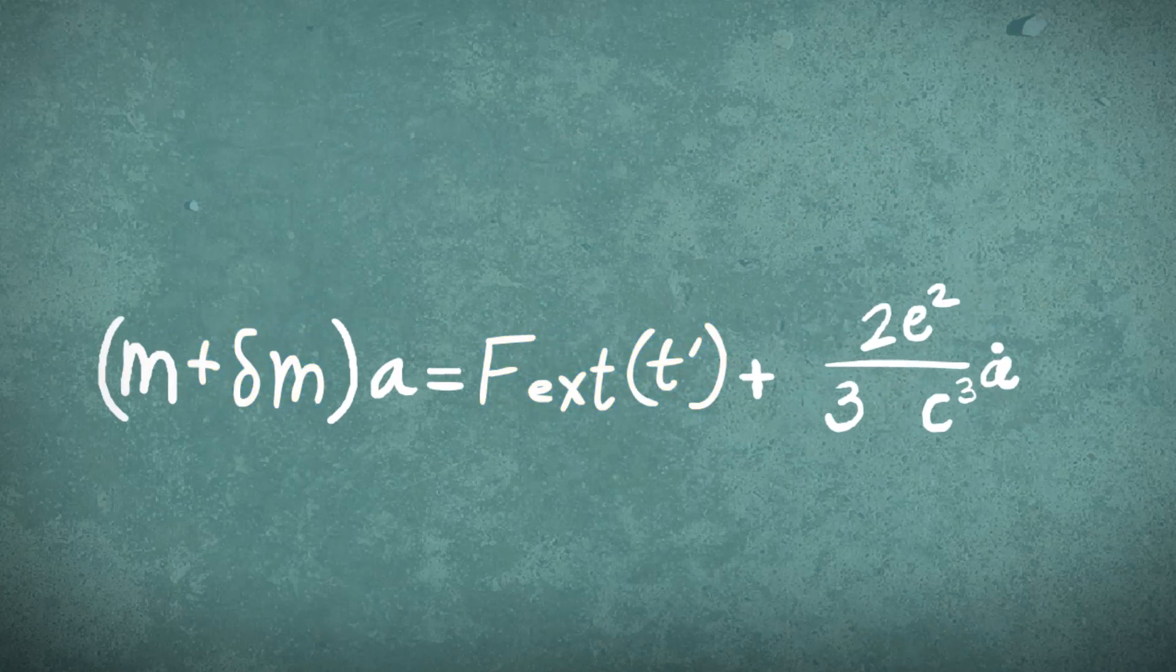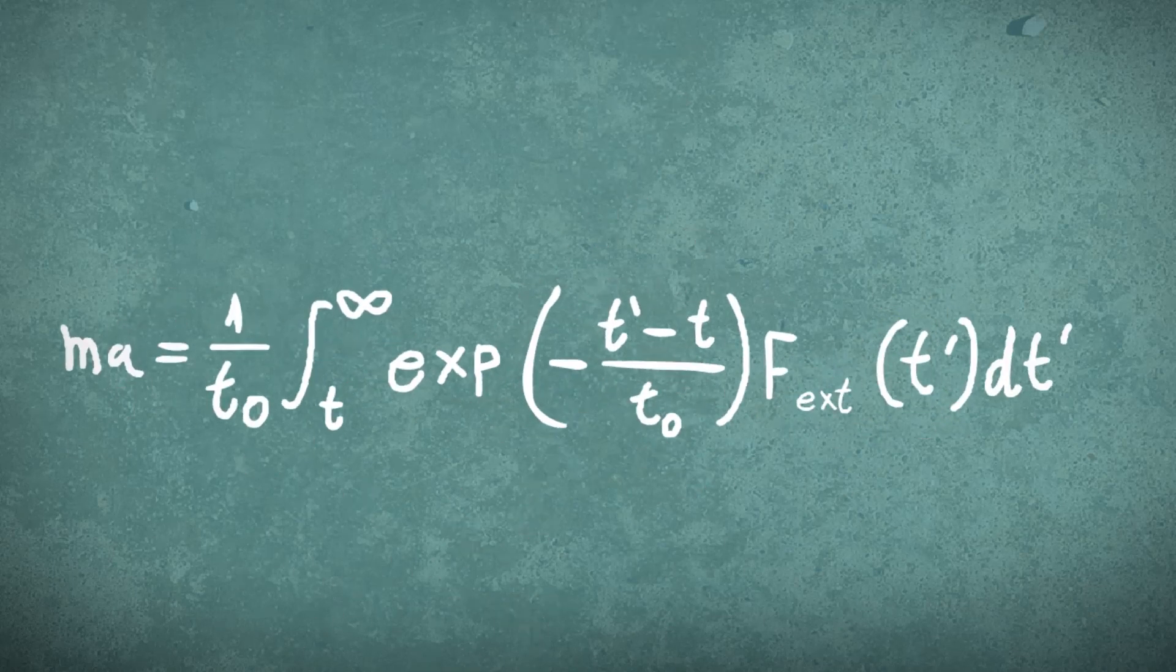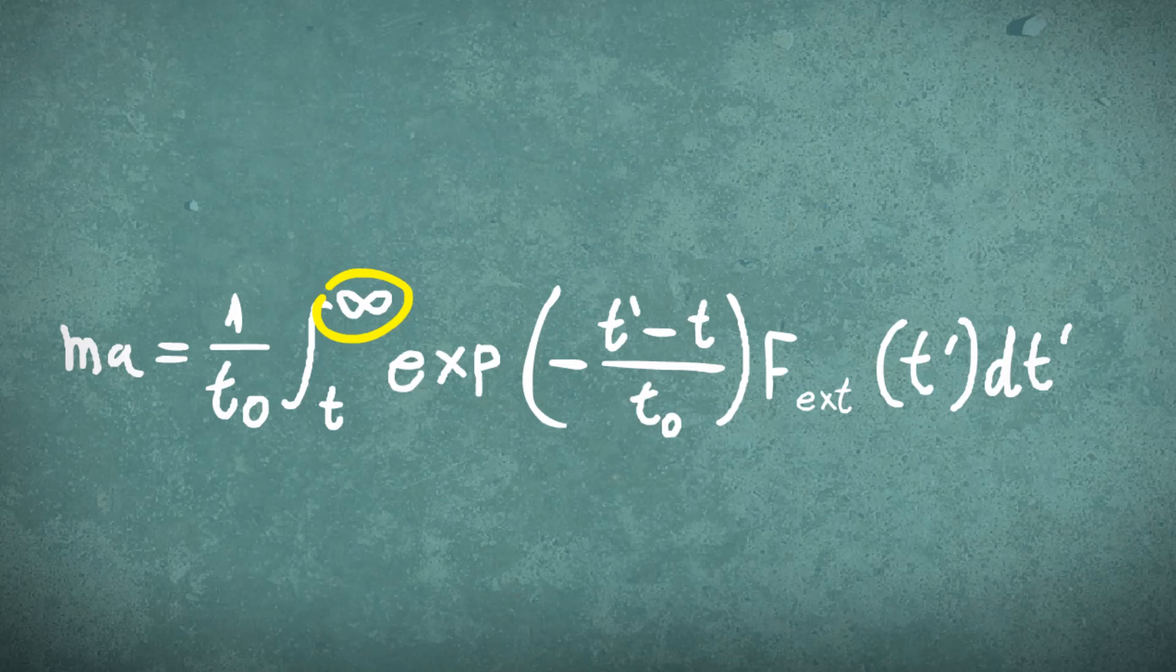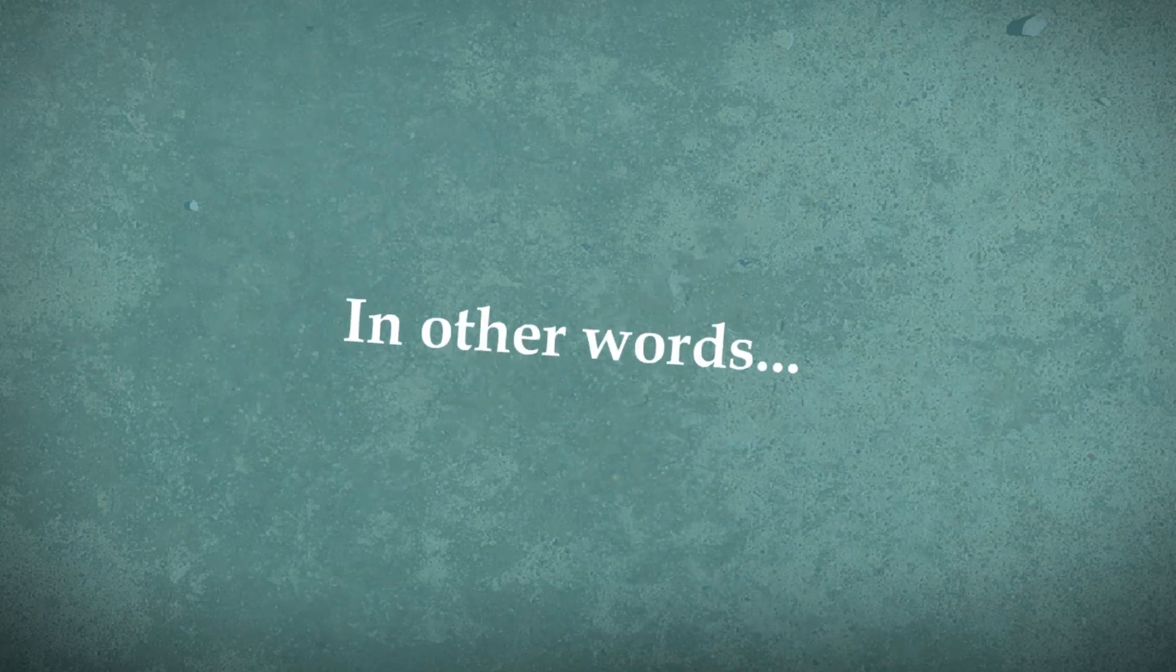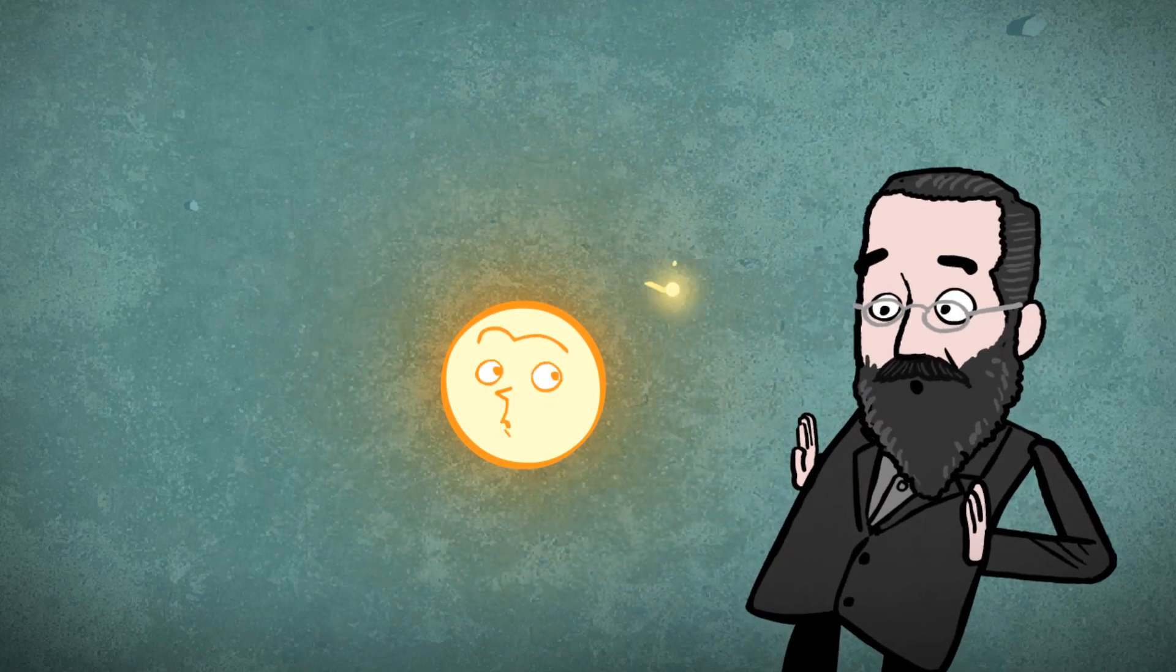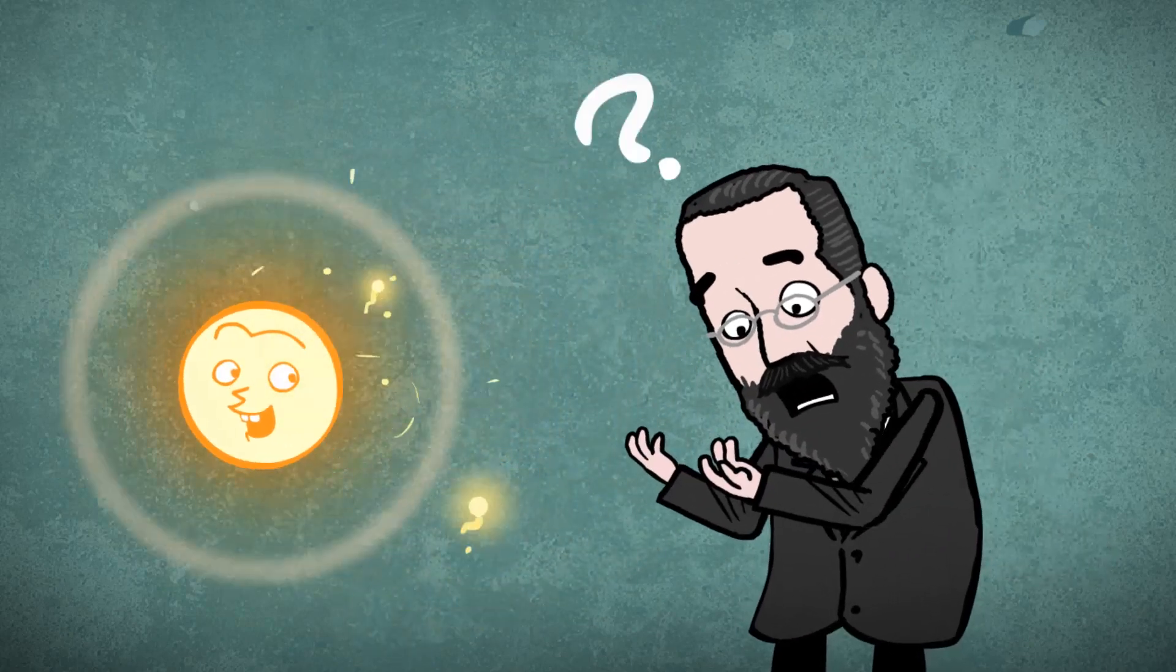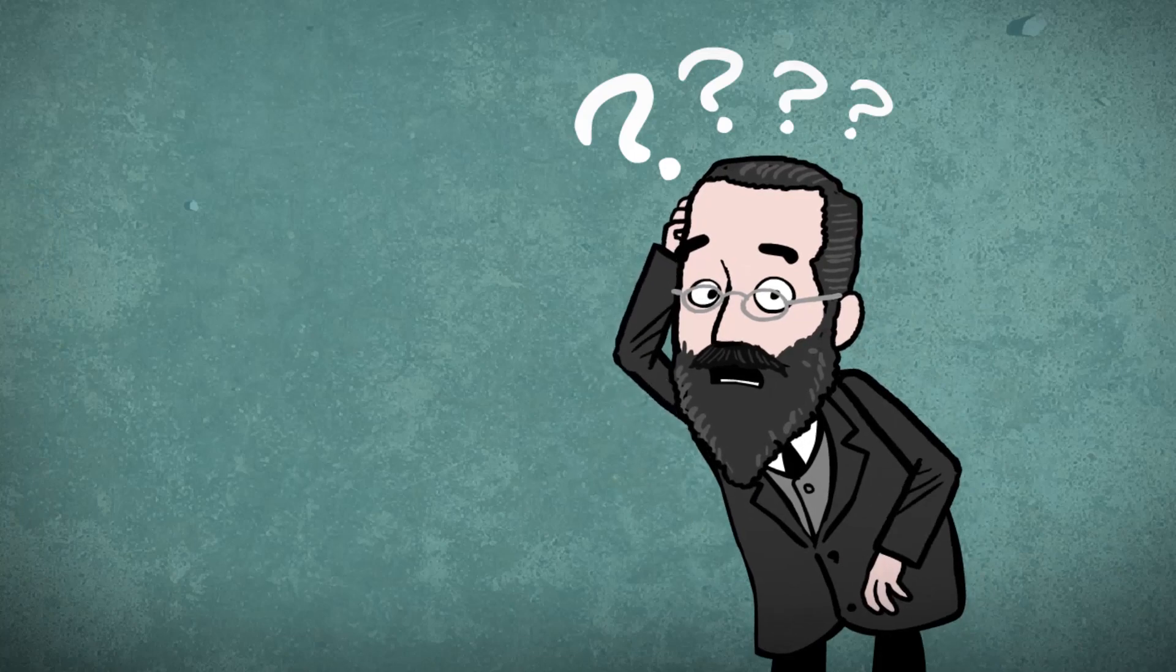Furthermore, if we look at the equation closely, we see that the integral extends from the present to infinity, far in the future. Thus, future values of the force affect the acceleration of the particle in the present. In other words, the acceleration of the particle happens prior to the application of the force that is accelerating it. Now, that's just unphysical, isn't it?